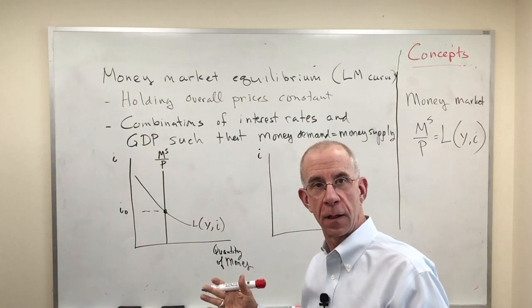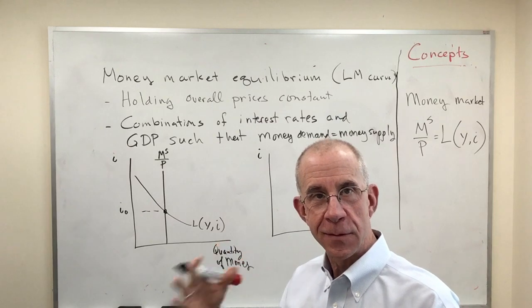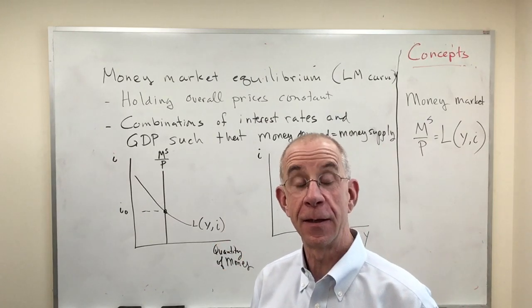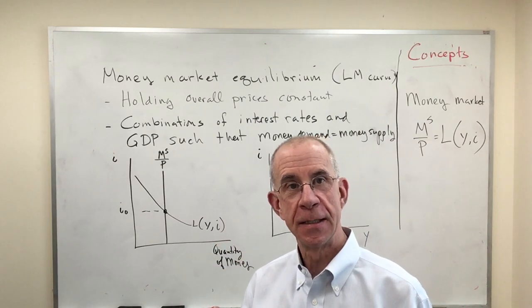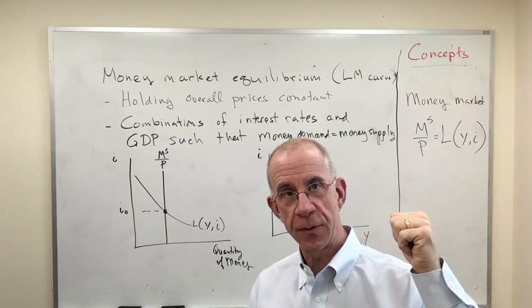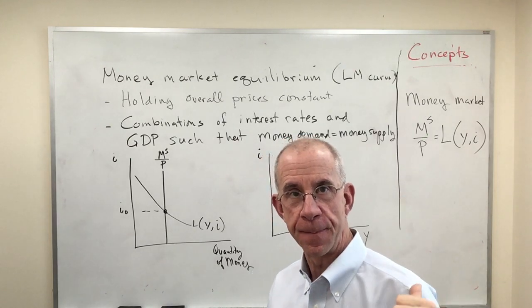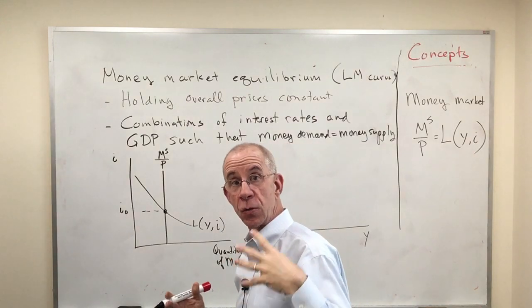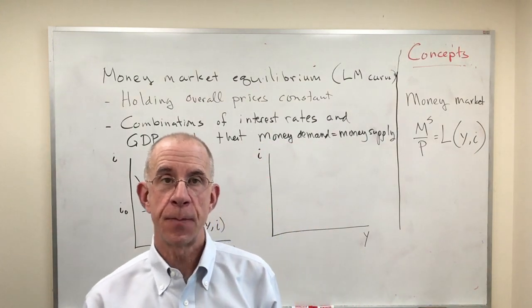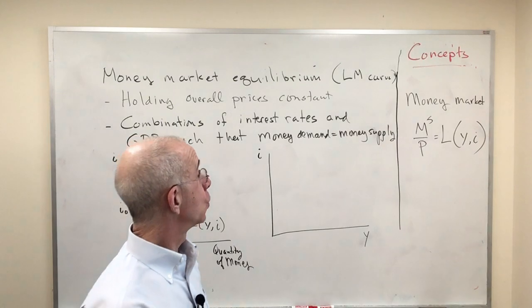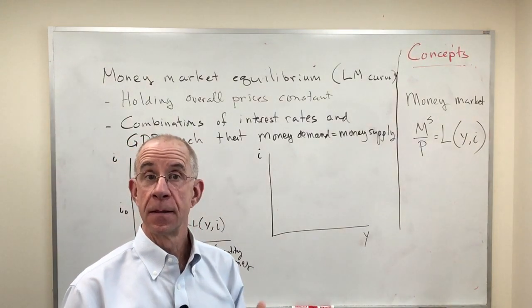Let's do the second part of the Standard Toolkit of Intermediate Macroeconomics, which is the LM curve. In the previous video, we did the IS curve, the goods market equilibrium. Now we're going to turn to another important part of the story, which is looking at the money market.